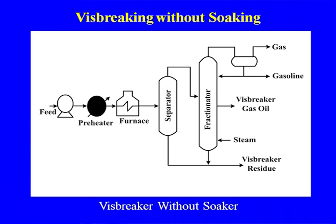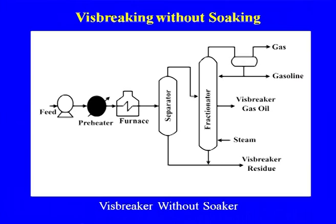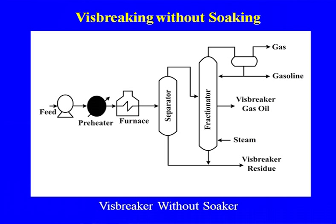The flow diagram of a typical visbreaker without a soaker shows the feed going to a preheater, then to the furnace where cracking takes place. The cracked products go to a separator, where the heavier part is obtained as residue and the lighter products go for further fractionation to produce light and middle distillate. Products separated include gas, gasoline, visbreaker distillate, and visbreaker residue.